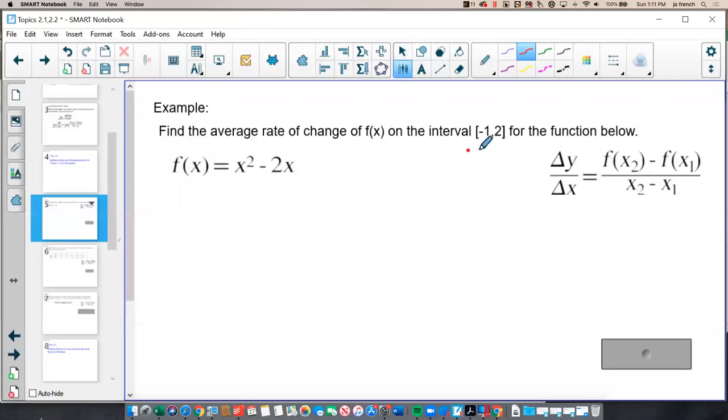Now, our interval notation here means that we are traveling from x equals negative 1 to x equals 2. Which means that using our average rate of change formula, we need to calculate the points when x equals negative 1 and x equals 2.